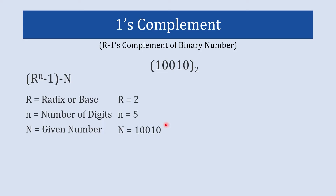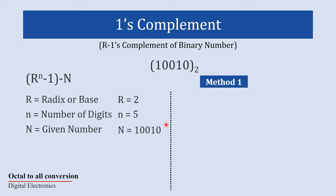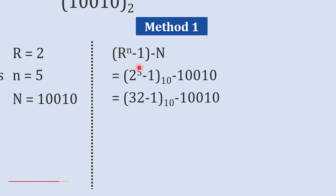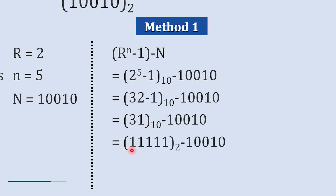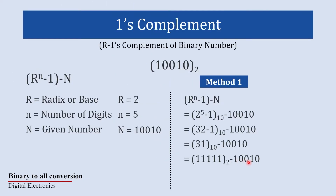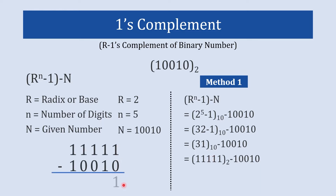Method 1 uses this equation. Placing all values: 2 raised to 5 is 32, minus 1 gives 31, and converting 31 to binary we get 1 1 1 1 1. Now we subtract 1 1 0 1 0 from 1 1 1 1 1. Subtracting bit by bit: 0 from 1 is 1, 1 from 1 is 0, 0 from 1 is 1, 1 from 1 is 0, 1 from 1 is 0 — giving us 0 1 1 0 1, which is the 1's complement.